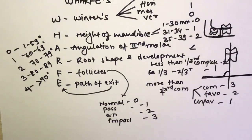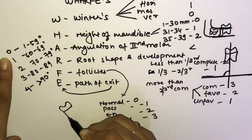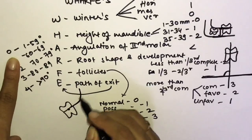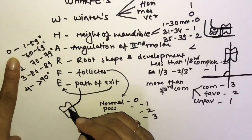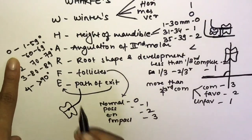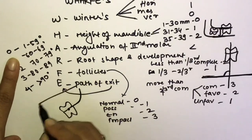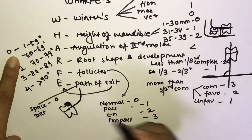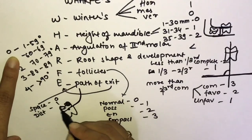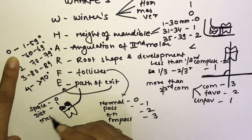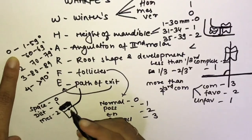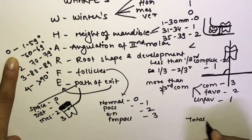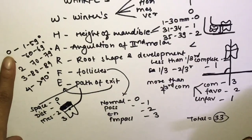Path of exit (E in WHARFE): based on the shadow of the coronoid process relative to the midpoint of the tooth. If space is available = 0; only the distal cusp is covered = 1; the mesial cusp is also covered = 2; both cusps are covered = 3. The total maximum WHARFE score is 33.